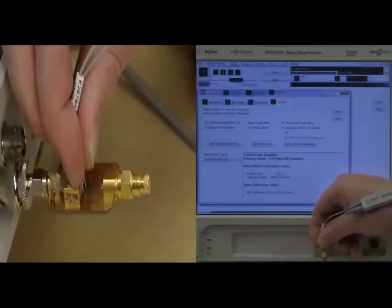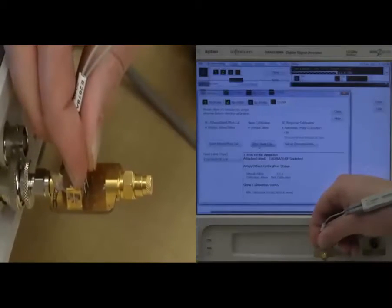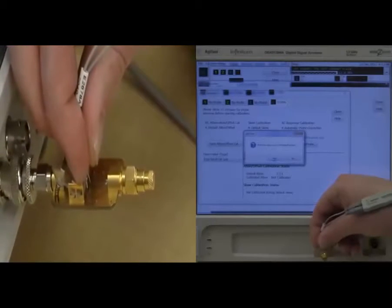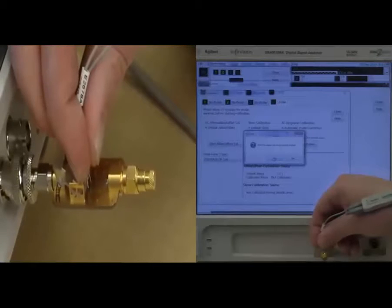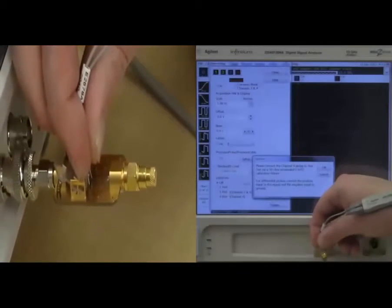Now, we can also do a skew-cal. This is really for channel 1 to channel 2 to channel 3 when using probes. I can simply hit start skew-cal. It's very important to have the 50-ohm load since it does source a fast edge into the calibration fixture. And without the load, we get a large reflection.